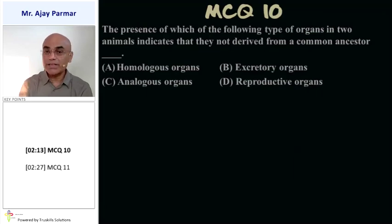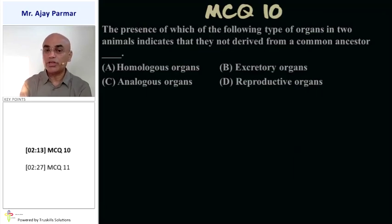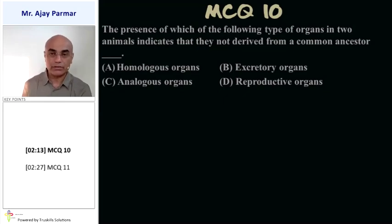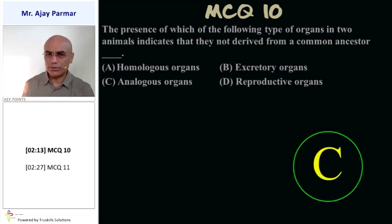The presence of which type of organs in two animals indicates that they are not derived from a common ancestor? That would be analogous organs — we have already studied that.